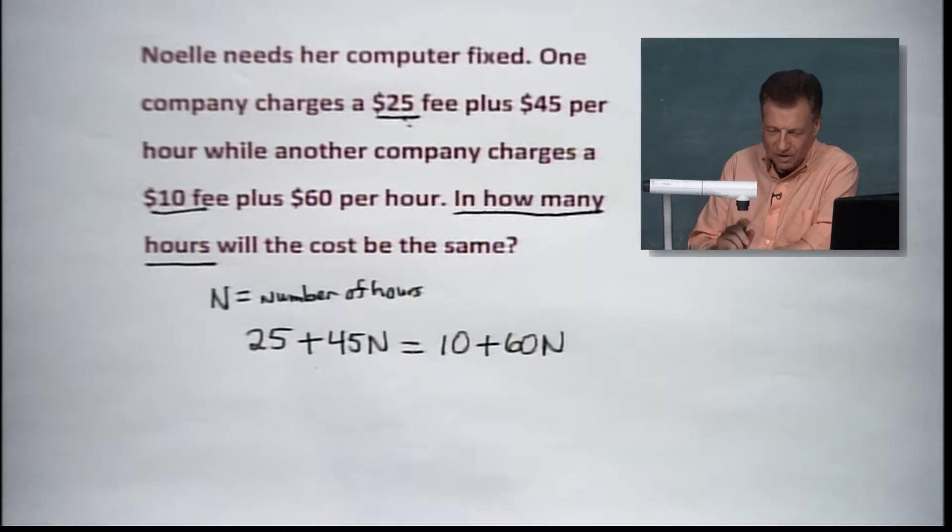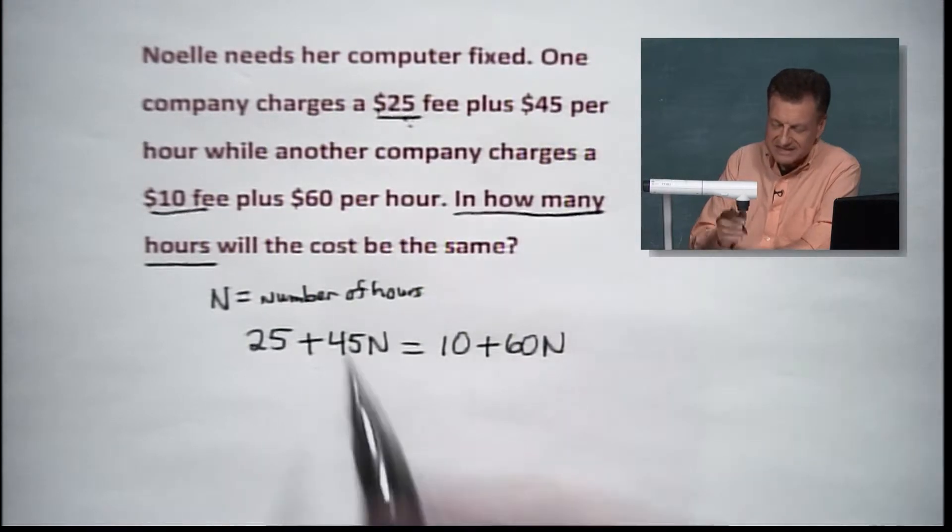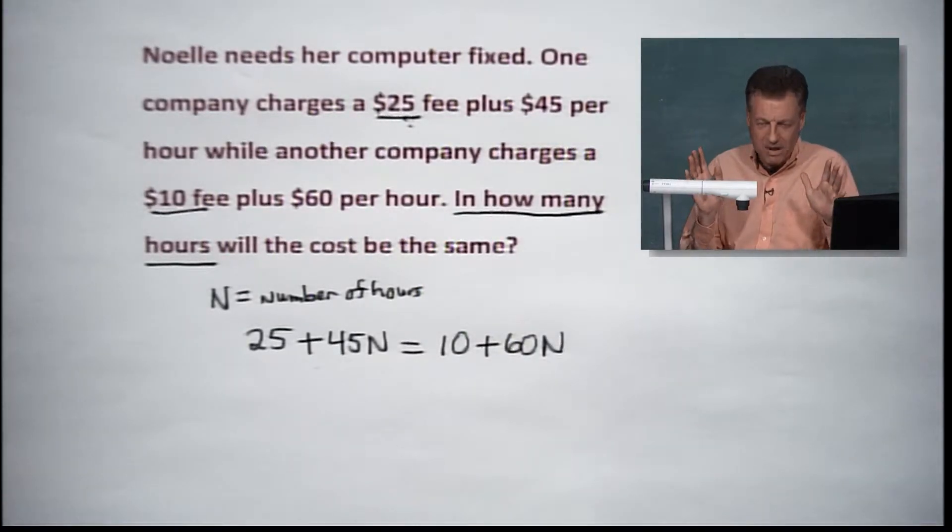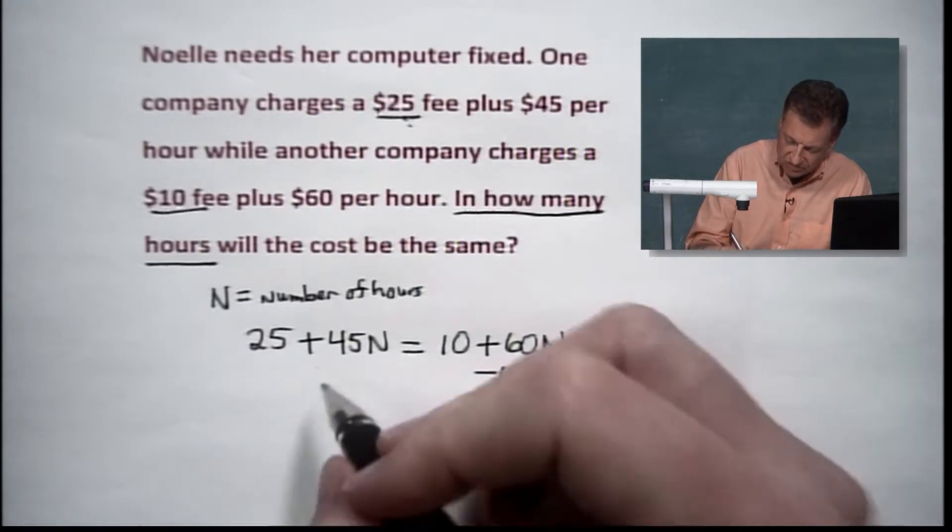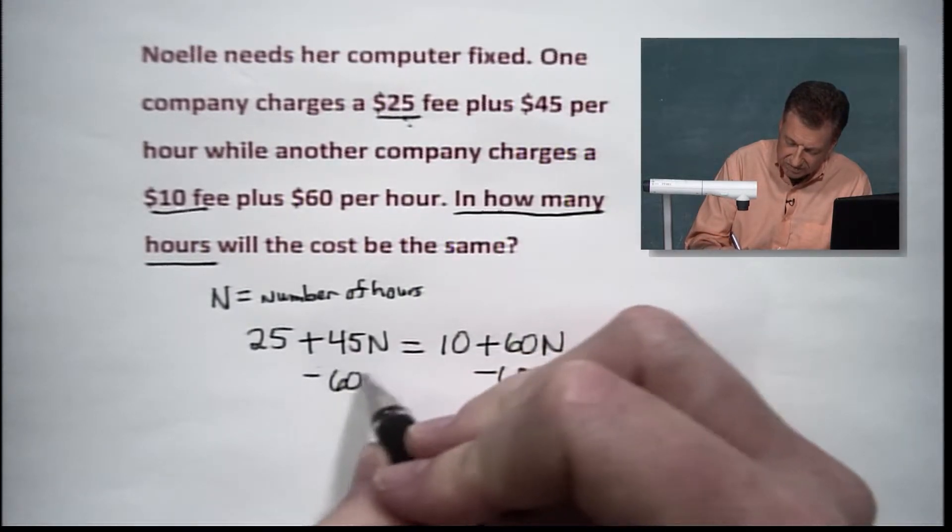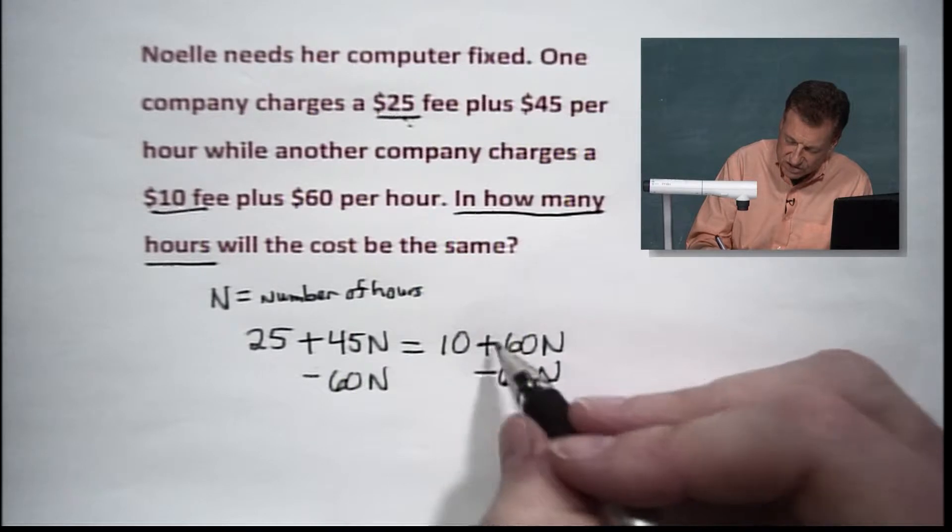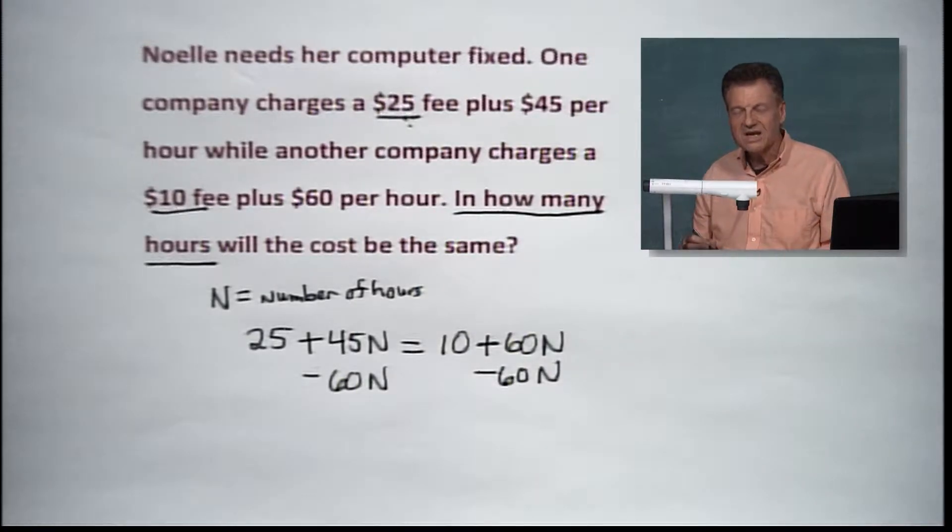Now, let's work it through here. First of all, let's get our Ns together. That's what we do on a problem like this. So we're going to subtract 60N from both sides. Why? Because there was an addition here. So to get rid of a positive 60, we have to subtract it.